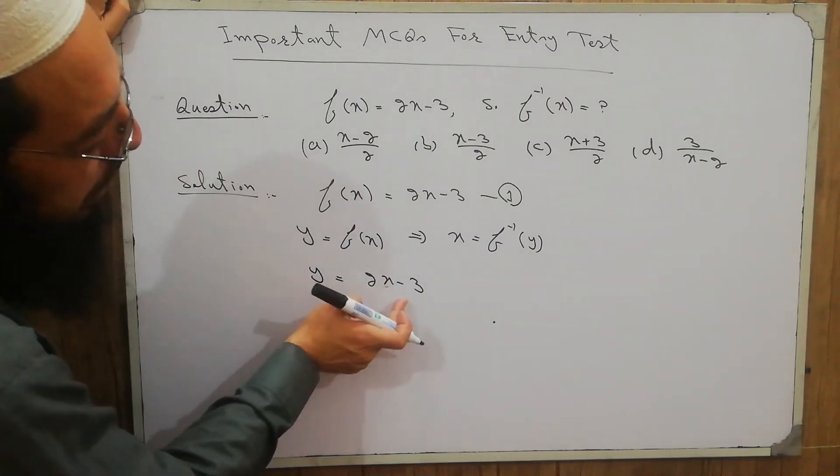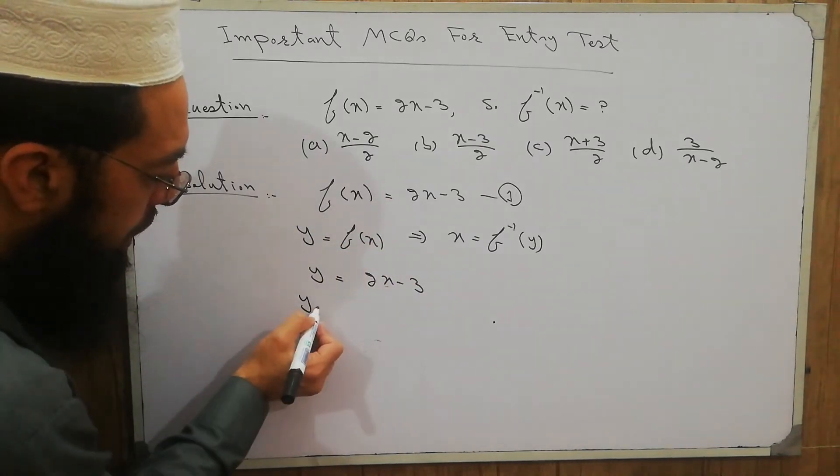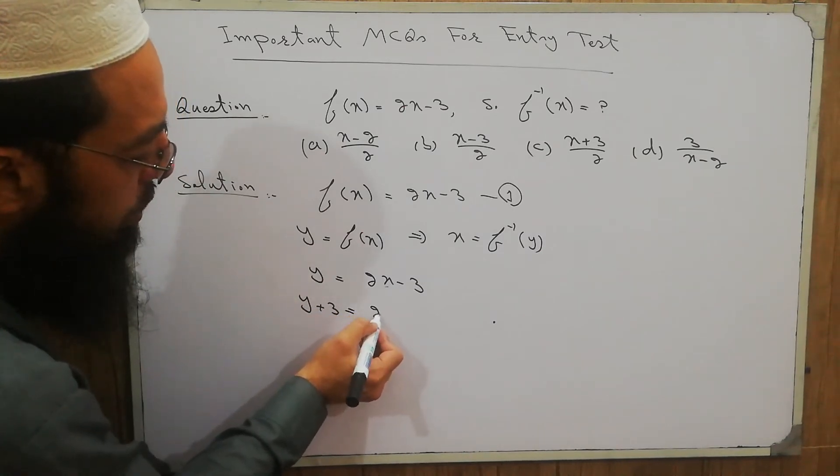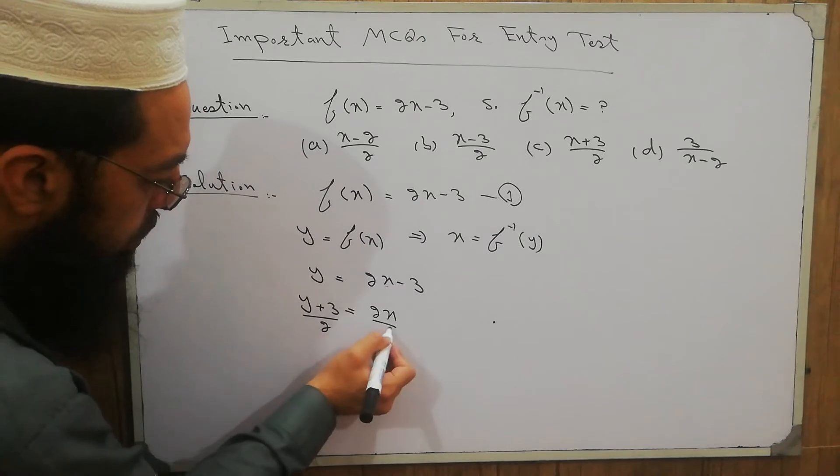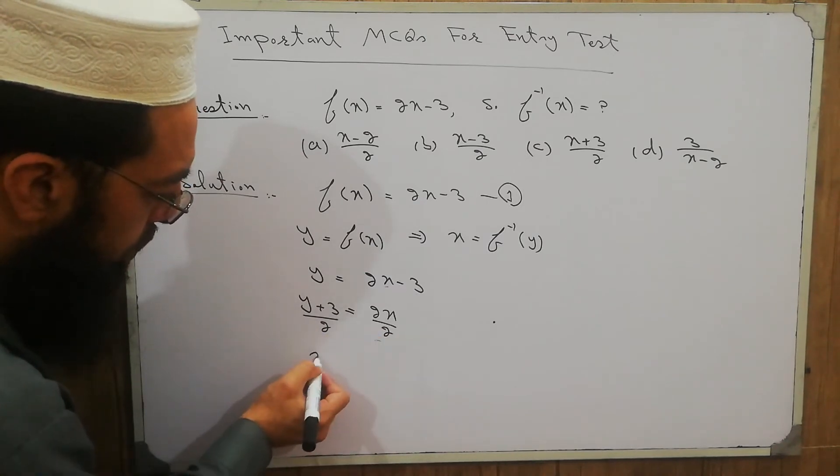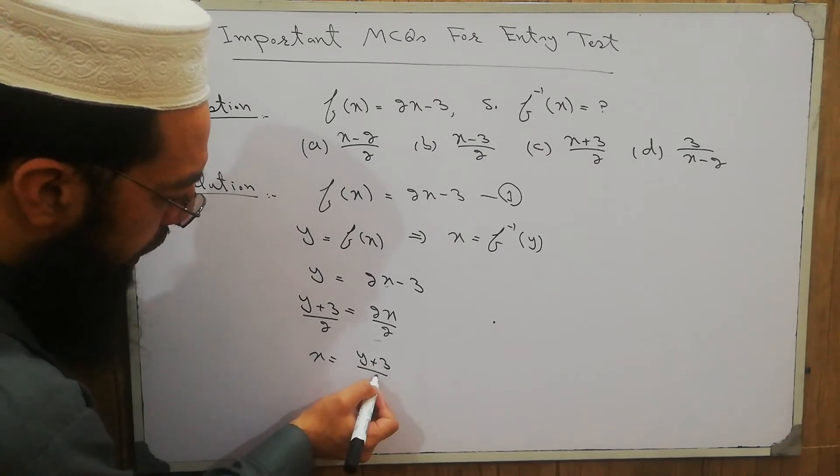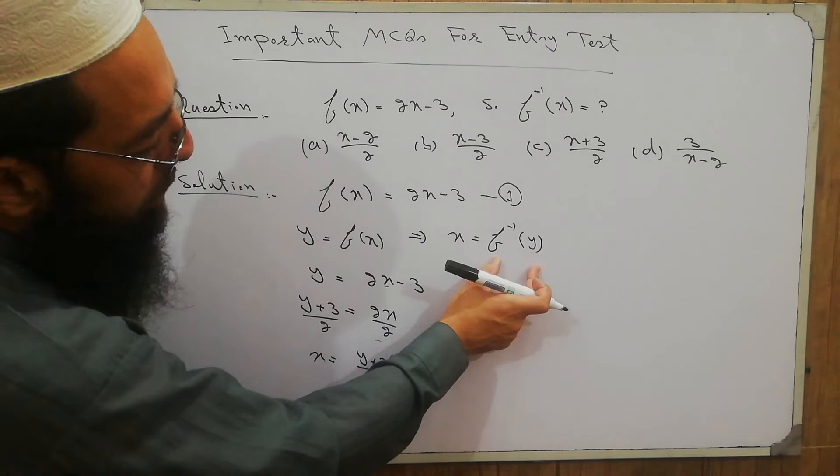So write x in terms of y. So y minus 3 plus 3 equals 2x. Divide both sides by 2. So x equals y plus 3 divided by 2, and x equals f inverse of y.